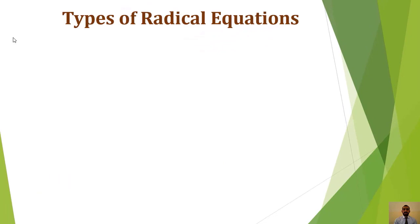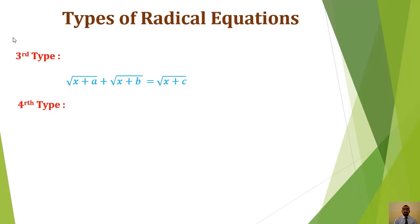Types of Radical Equations. Students, today we discuss the third type and fourth type of radical equations. Third type: √(x+a) + √(x+b) = √(x+c). Fourth type: √(x²+bx+m) + √(x²+bx+n) = q. In the third type, linear expressions appear under the radical sign, and in the fourth type, quadratic expressions appear under the radical sign. Today we will learn to solve both types of questions.